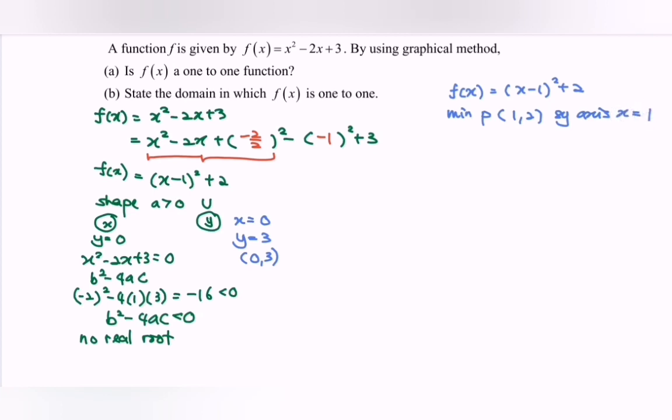Next, we are going to sketch the graph. By referring to the shape, we have the U shape. Then we have the x-intercept does not exist. Then we have (0,3). So here we have 1, 2, and 3. Y-intercept. Continue, we have the minimum point (1,2). Let's say over here.